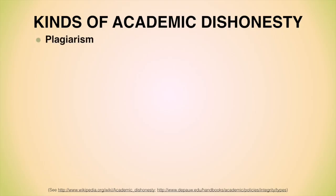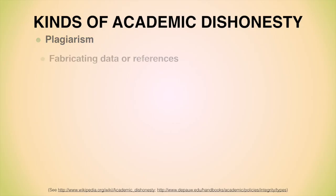Plagiarism is the most common. As you'll see later, plagiarism is presenting someone else's words or ideas as if they were your own. Fabricating or making up data or references is another common kind of academic dishonesty, involving inventing things that don't exist to avoid doing the hard work of scholarship.